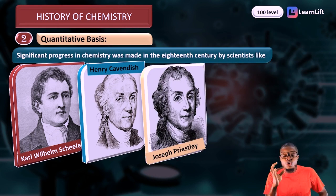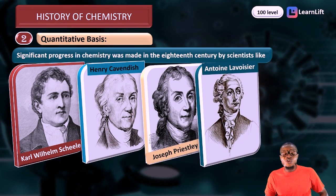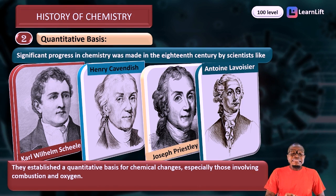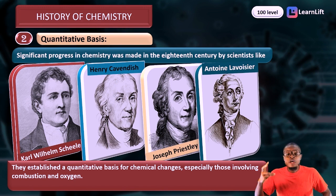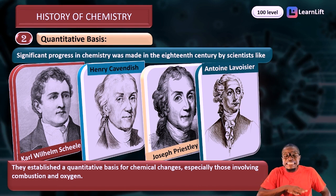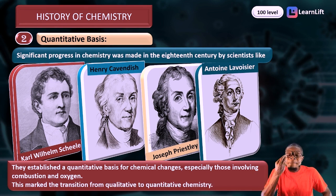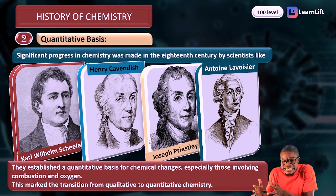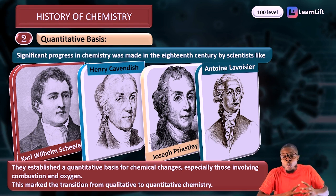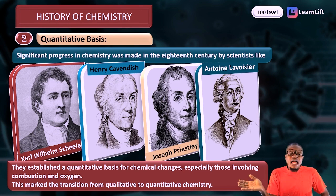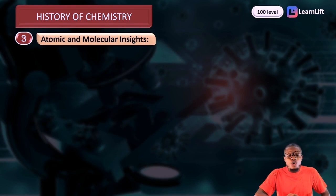Other 18th century scientists included Joseph Priestley and Antoine Lavoisier. These scientists established a quantitative basis for chemical changes, especially those involving the reactions of oxygen — and any time oxygen is involved, we're talking about combustion. This marked the transition from qualitative, or historical perspective, analysis to quantitative basis in chemistry. After them came atomic and molecular insights.